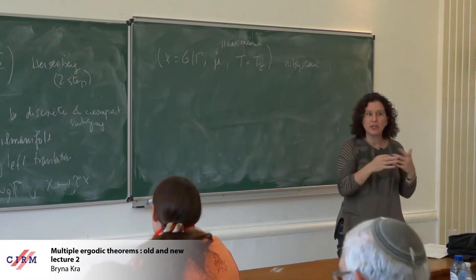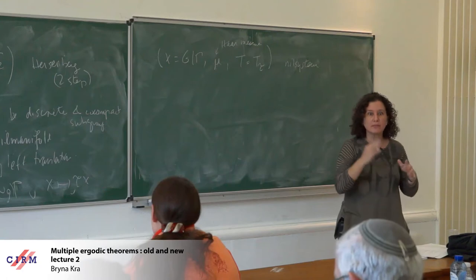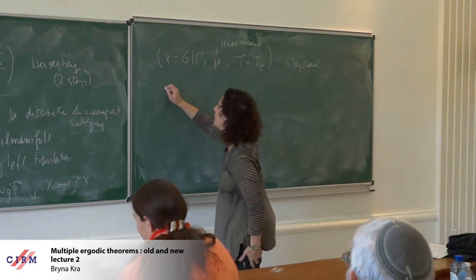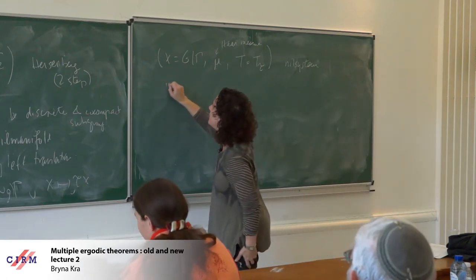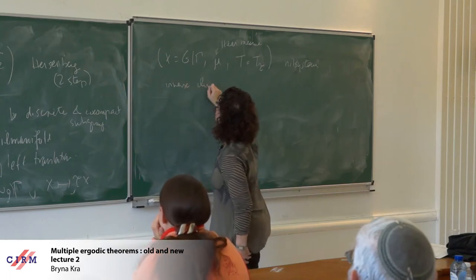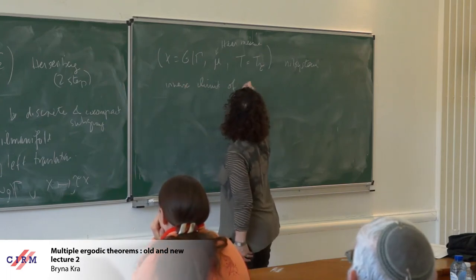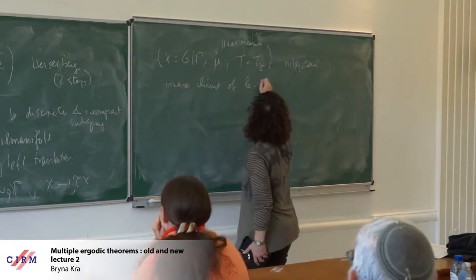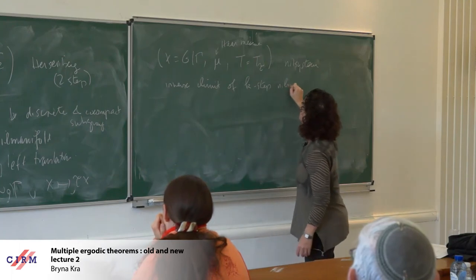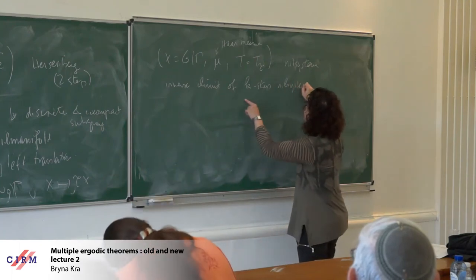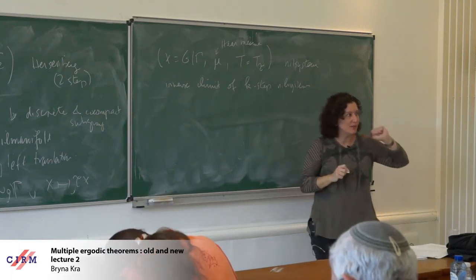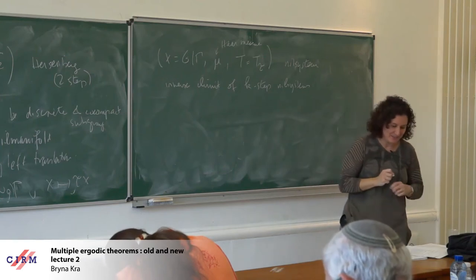An inverse limit of these — an inverse limit of a sequence of nil systems — is a whole system where each of the terms in the inverse limit is a nil system for the same k. I'm not allowed to change this step. So I want the statement: inverse limit of k-step nil systems, where k is fixed. An inverse limit of one-step nil systems — abelian — is just still a compact abelian group. But when you get to two-step, taking an inverse limit gives more complicated behavior.